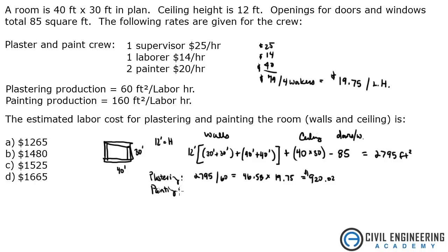For painting, you've got 2795 square feet divided by 160 square feet per labor hour, and that gives me 17.47. Multiply that by the same hourly rate, and that gives me $345.03. Add those two together, and I get $1265.05. Looks like your closest answer here is A.